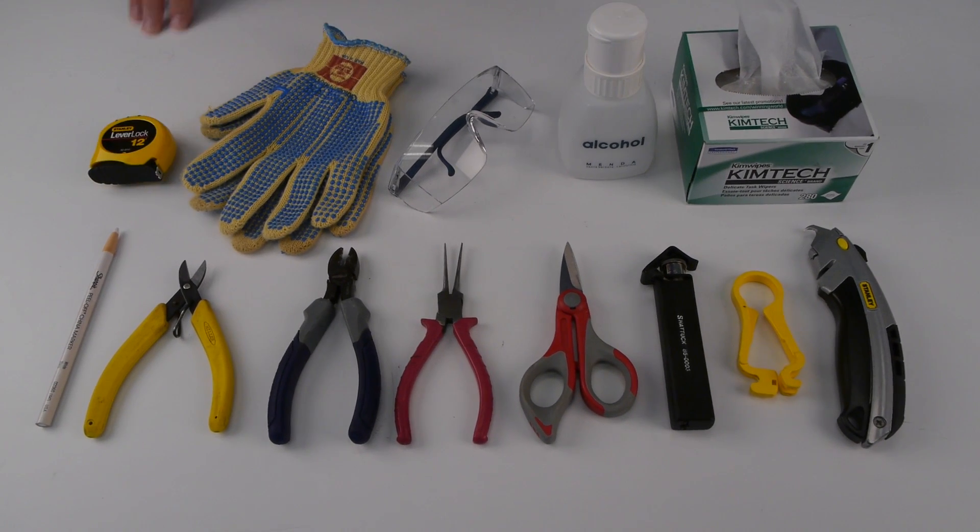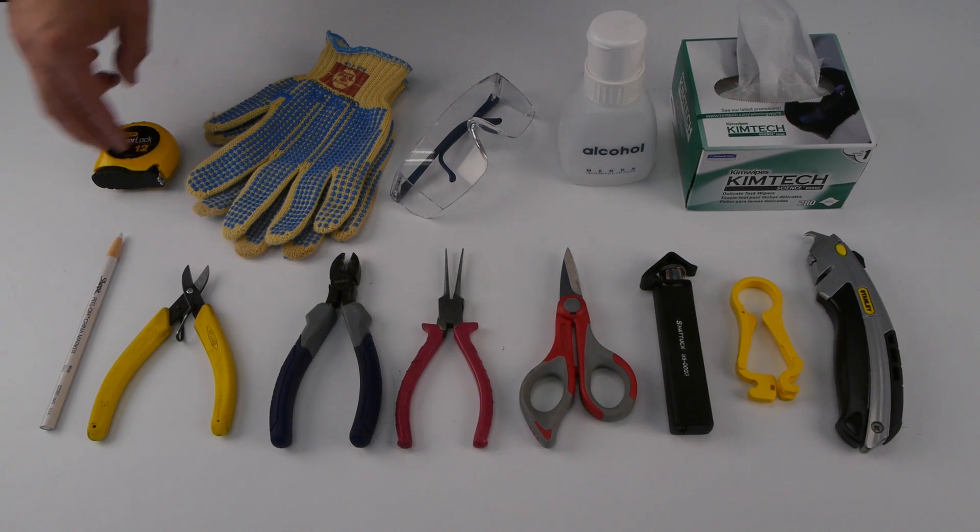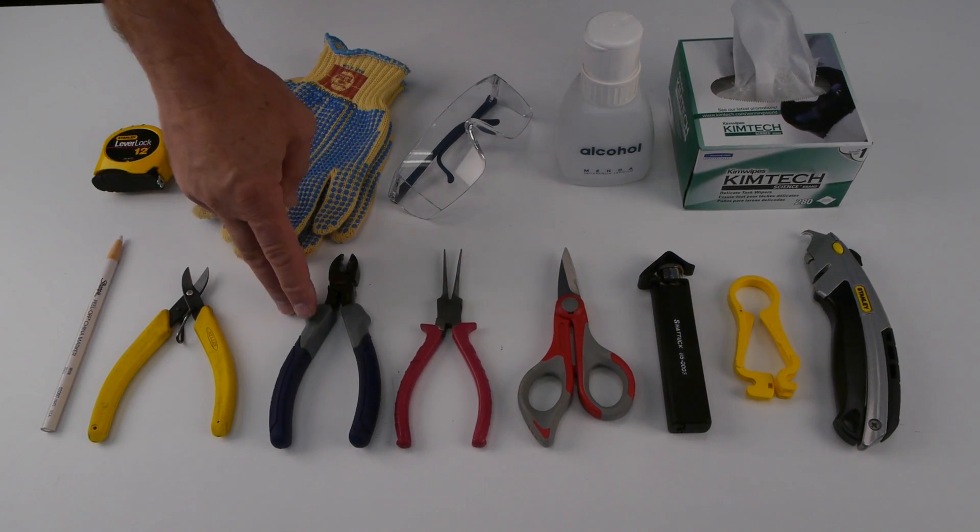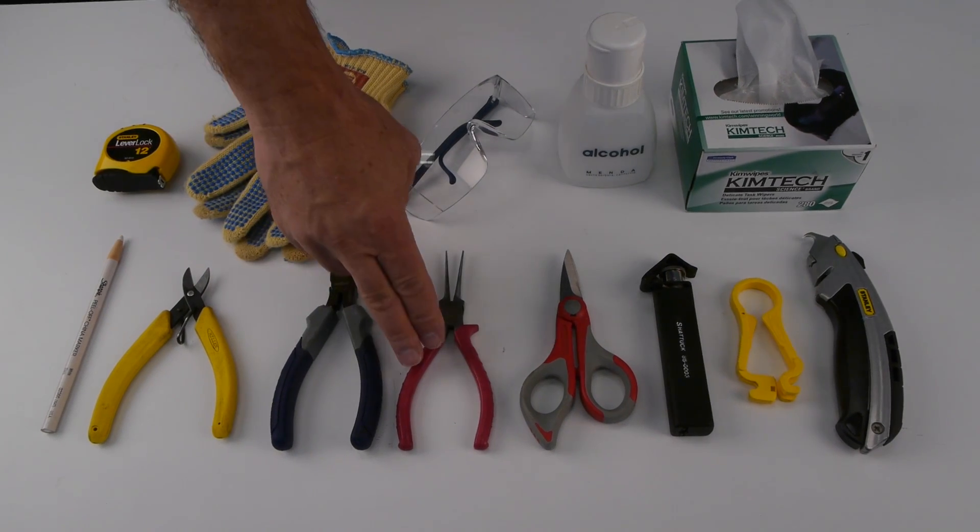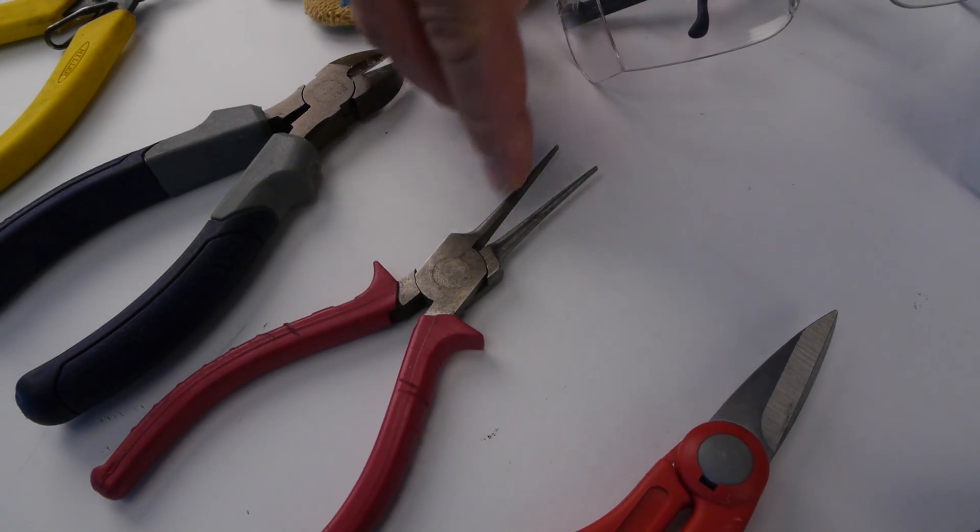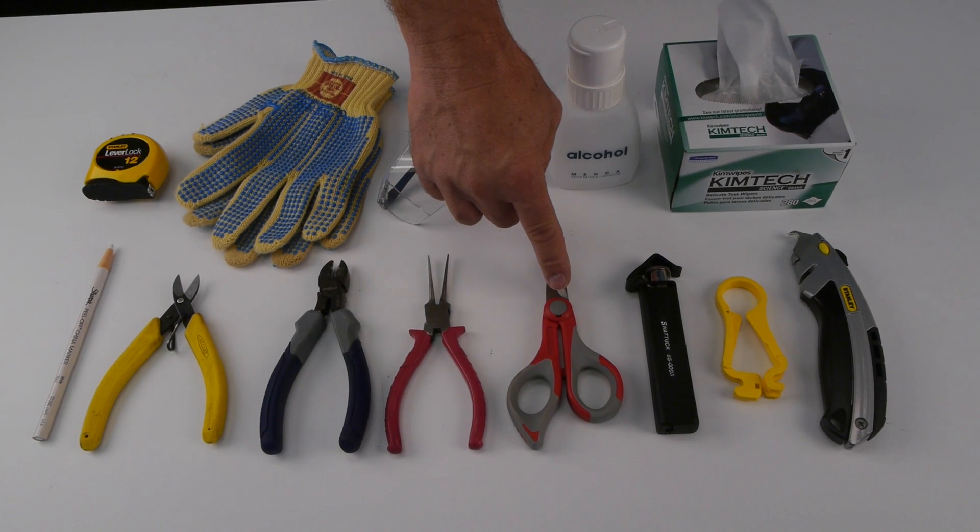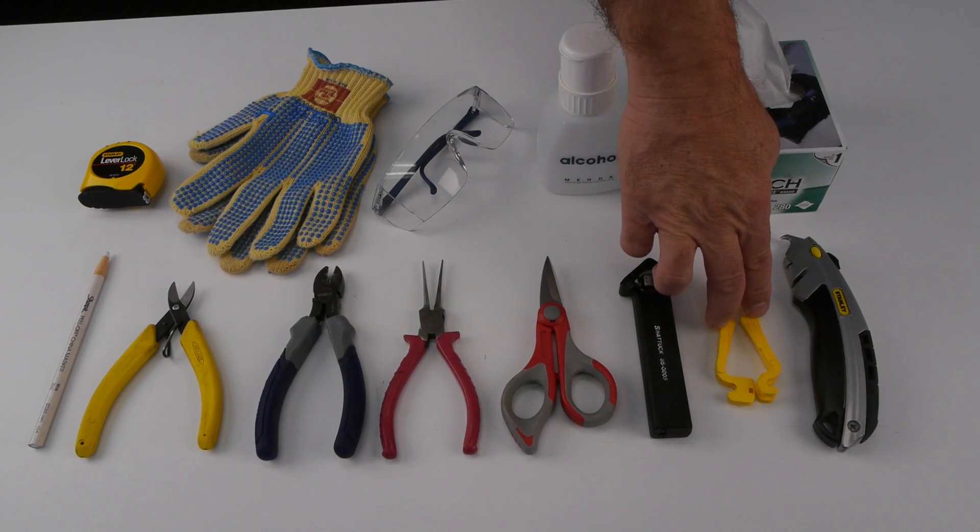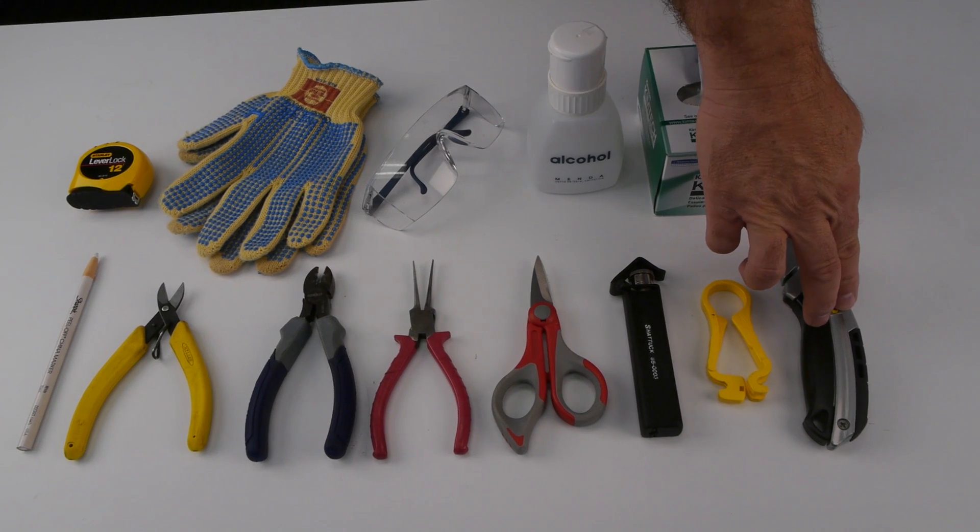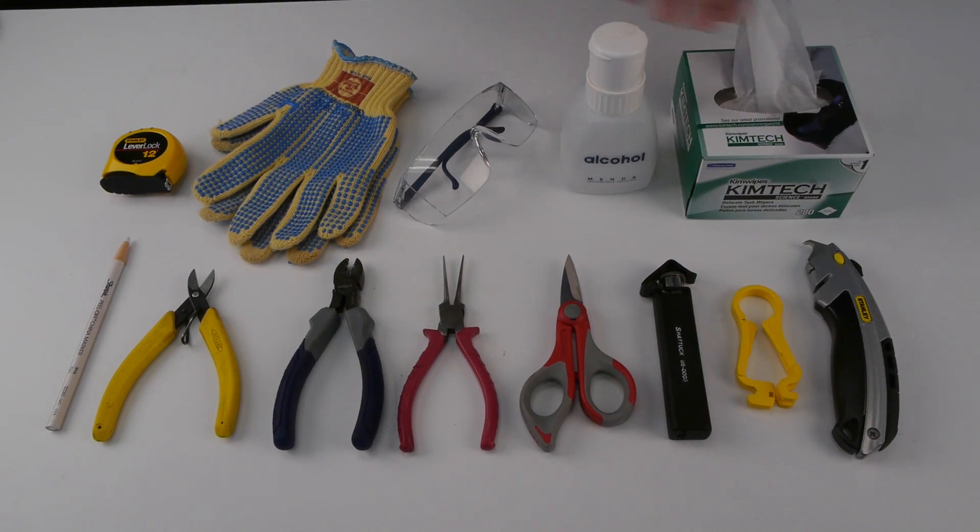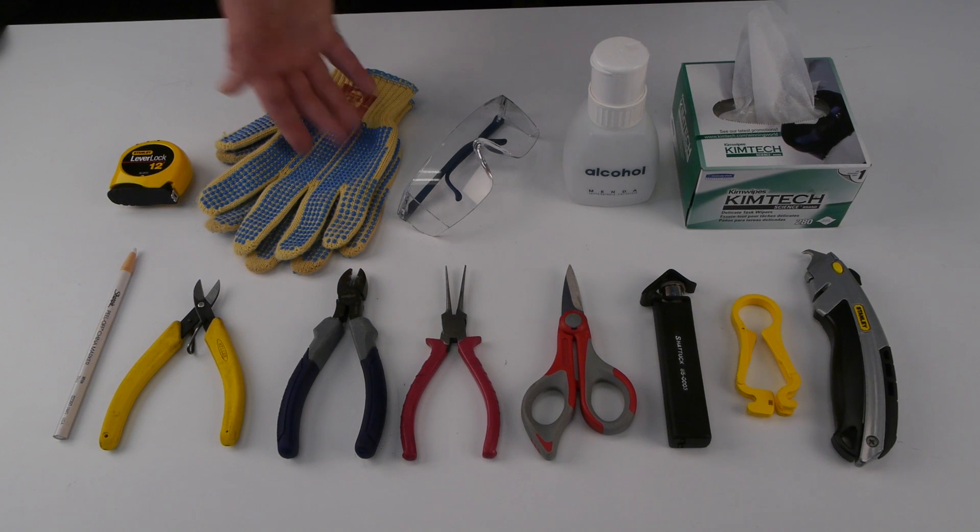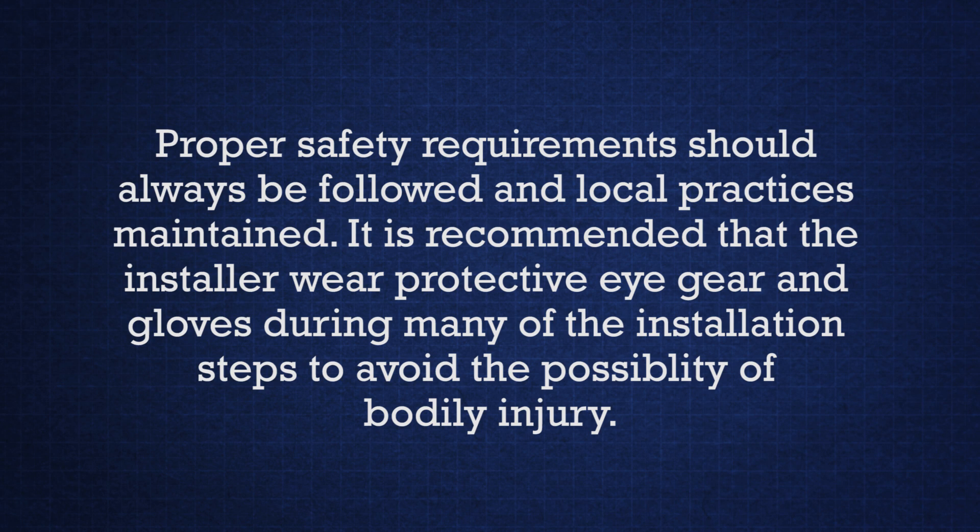Materials required: measuring tape, china marker, aramid shears, diagonal cutters, needle nose pliers preferably with rounded edges, cable snips, rotary cable slitter, fiber tube scorer, hook blade razor knife, lint free wipes, regent grade 99% alcohol, safety glasses and gloves. Proper safety requirements should always be followed and local practices maintained.